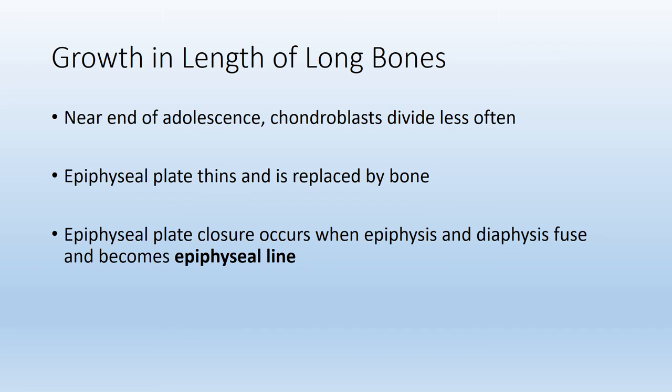Eventually, long bones stop lengthening. Near the end of adolescence, usually between ages 18 and 21, activity in the epiphyseal plate declines. When the epiphyseal plate shows no more cartilage and we see fusion of the epiphysis with the diaphysis, we call it the epiphyseal line. The epiphyseal plate is the active growth plate with cartilage; the epiphyseal line is where that plate is completely ossified and we have no more lengthening.